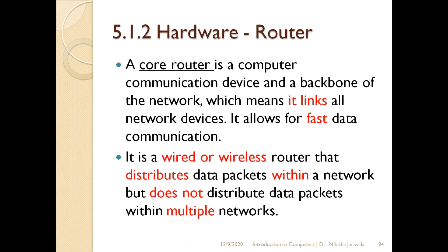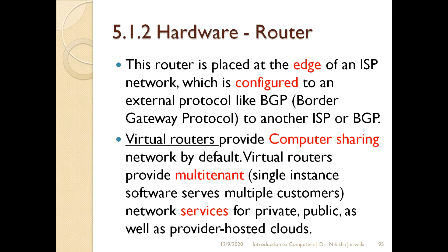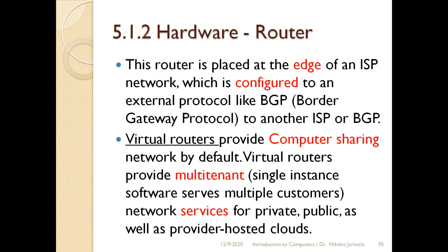If there are multiple networks, we cannot use the core router to route across them because it does not have that capability. The core router is used within the internet service provider network, at the boundary or edge of the network.